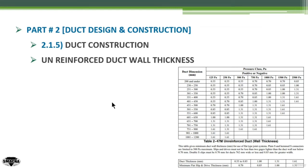Ducts can be either reinforced or unreinforced. For ease of illustration, we will start with the small tables for unreinforced duct sheet wall thickness. After obtaining the pressure classification of the duct, this becomes the entry key for the following table, which is used to specify the sheet metal thickness of the duct.